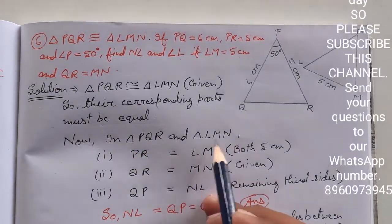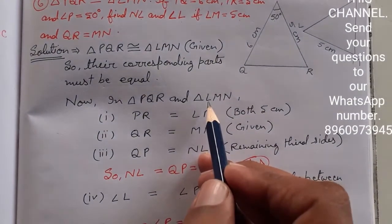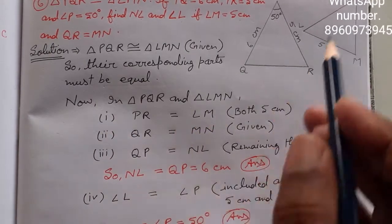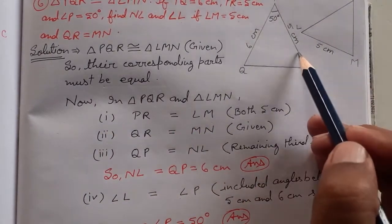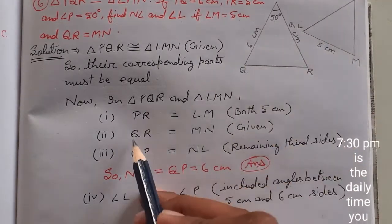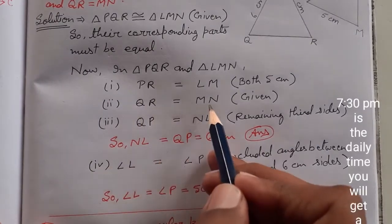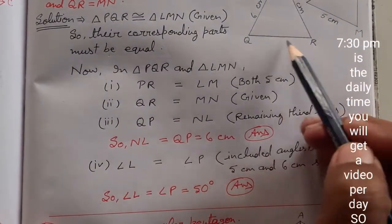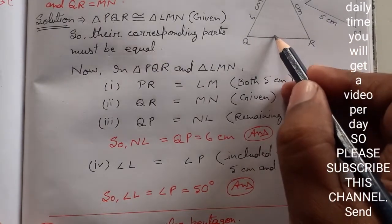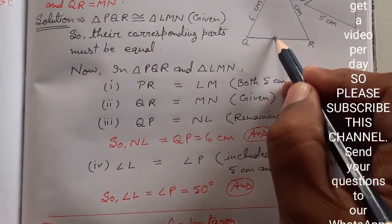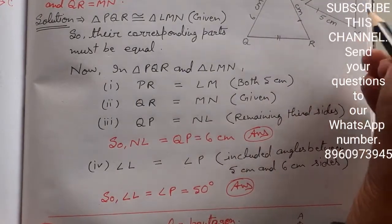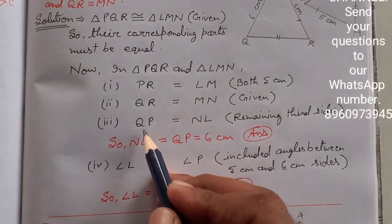In these two triangles, we will see: first, PR equals LM, both 5 cm. You can see that the PR side and LM side are equal because both lengths are 5 cm. Second, QR equals MN. QR, this side here, equals MN.